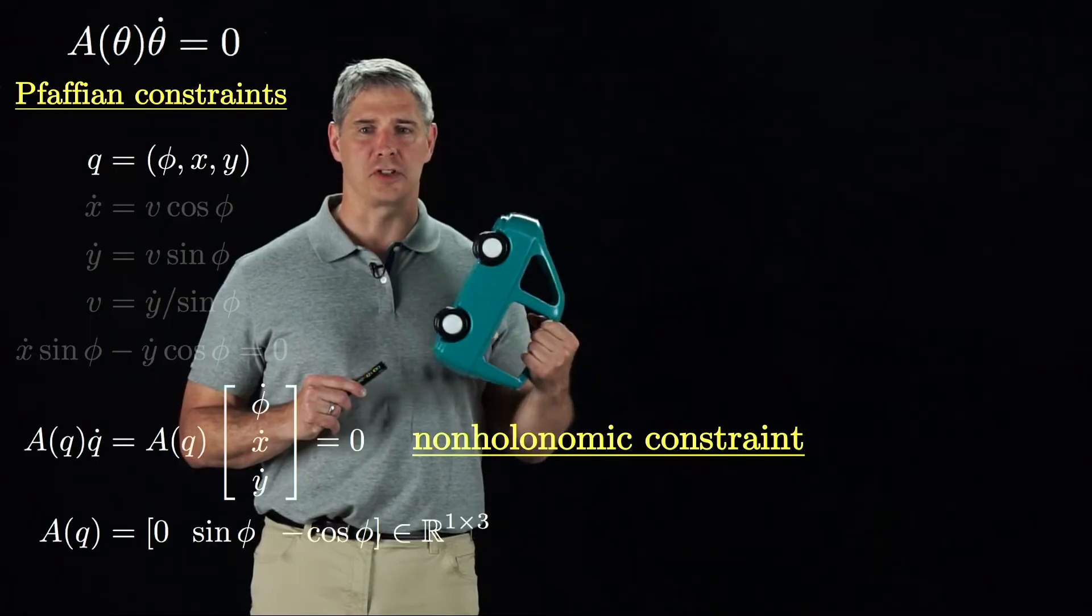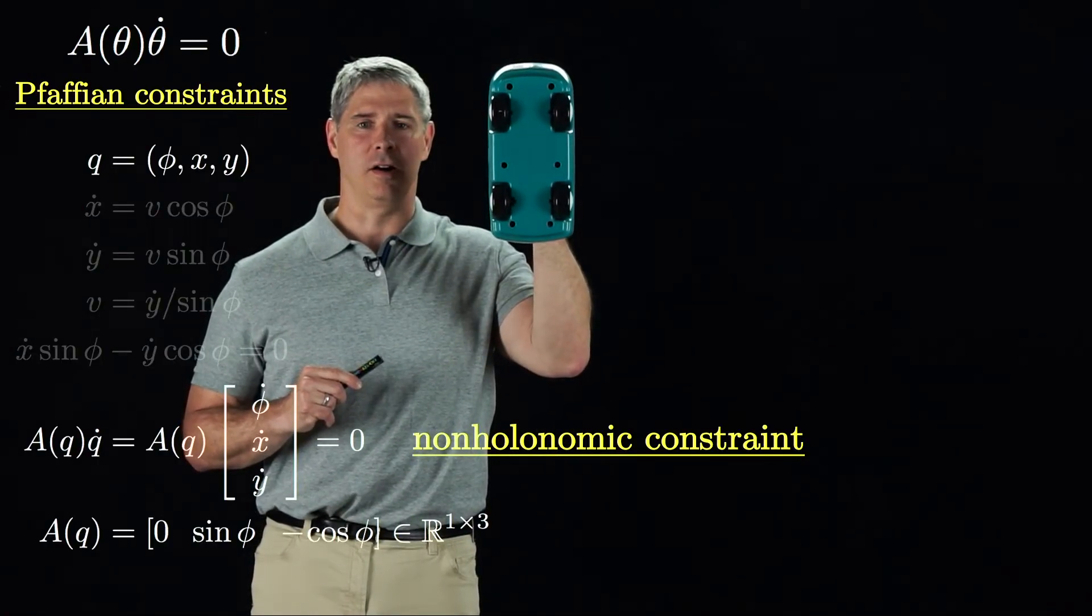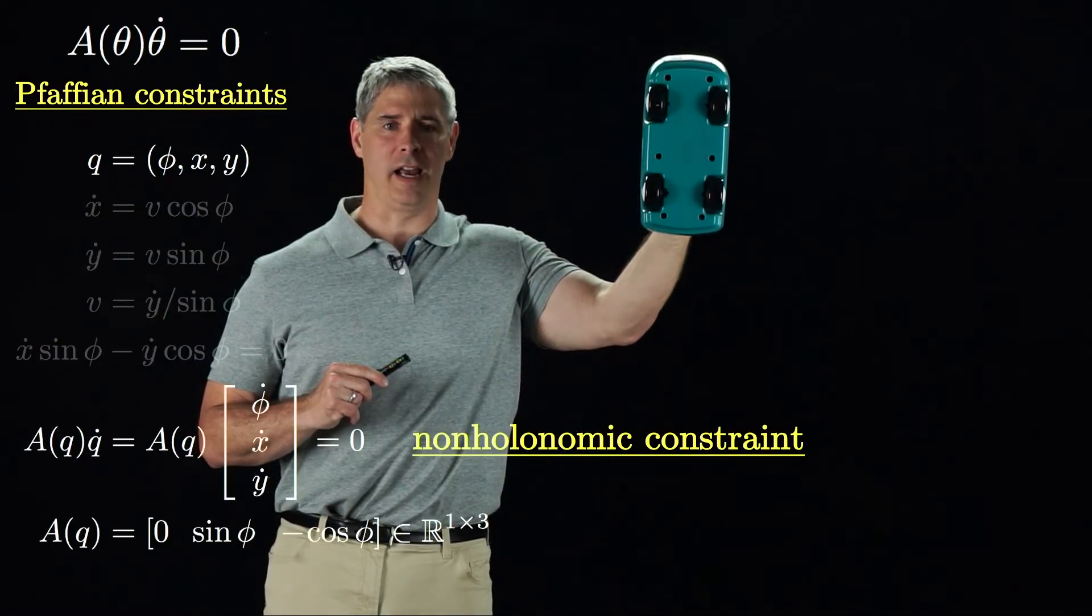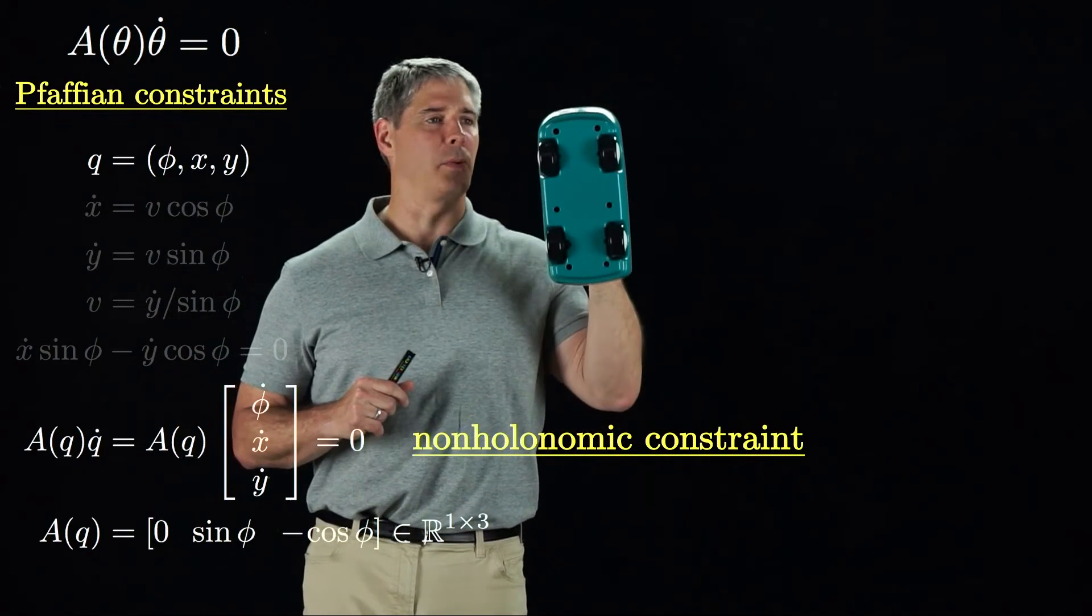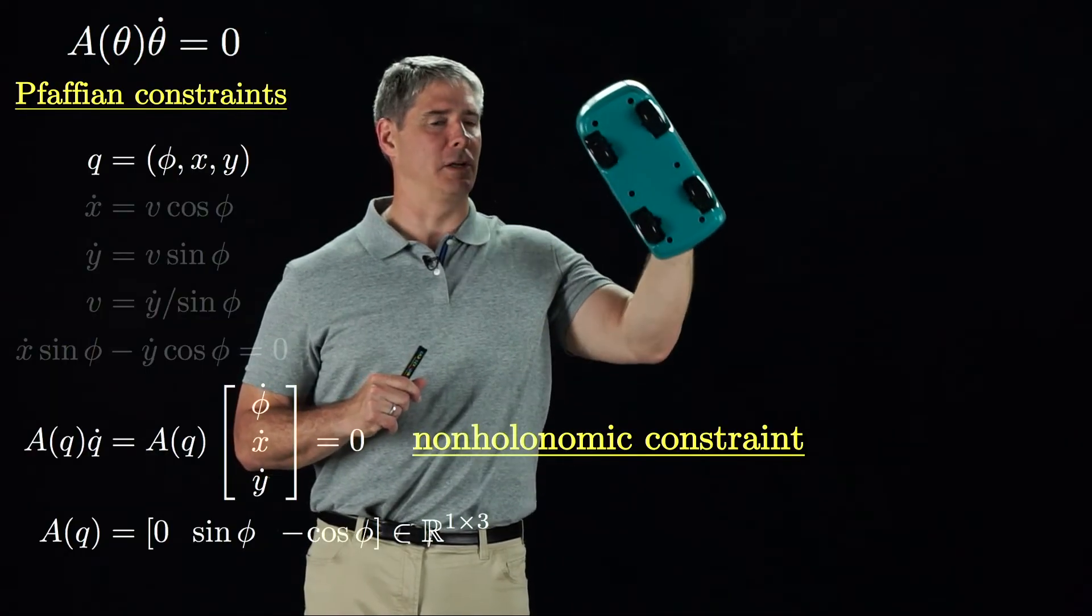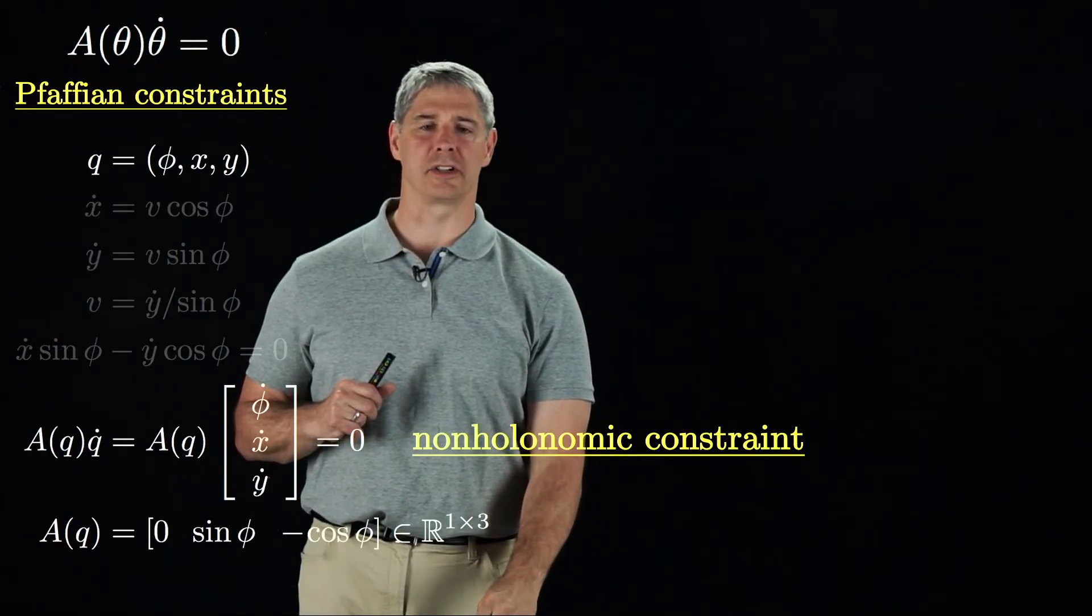A non-holonomic constraint reduces the space of possible velocities of the car. The car cannot slide directly to the side, but it does not reduce the space of configurations. Sideways motions can be achieved by parallel parking, and the car can reach any configuration in its three-dimensional C space.